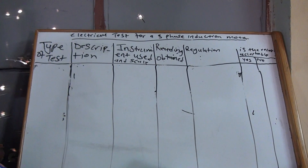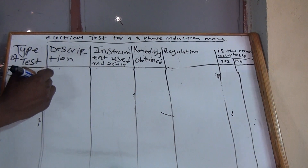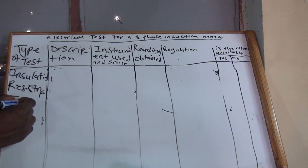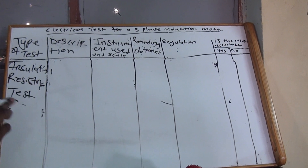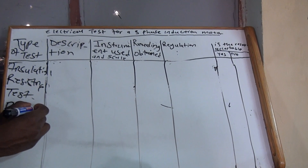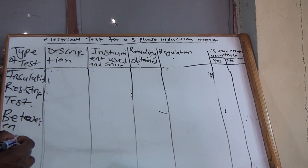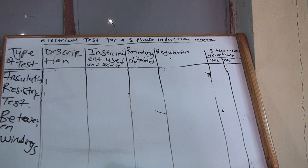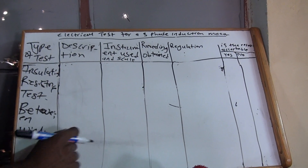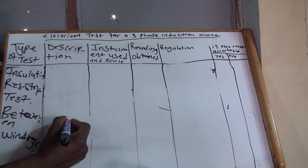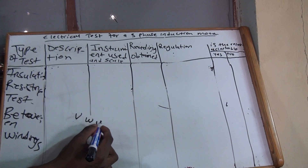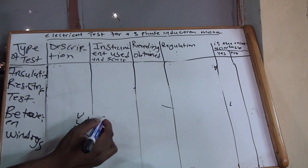The second test is the insulation resistance test between windings. On the description, write the actual points you are going to measure. I use U, V, W as a guide — so the pairs will be V1 and W1, then V1 and U1, and then what's left is W1 and U1.